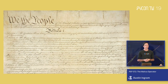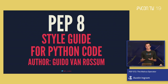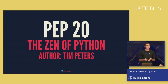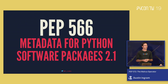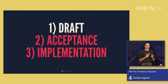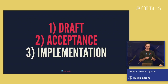Can anybody name a PEP? PEP 8 — the style guide for Python code, authored by Guido Van Rossum himself. Another popular PEP is PEP 20, the Zen of Python, authored by Tim Peters. My favorite PEP is PEP 566, Metadata for Software Packages 2.1 — because I am the author. When I wrote that PEP, I had a draft, shared it with interested people, sent it for acceptance, and then implemented it. Guido himself probably never read it; it's about Python packaging, not core Python.